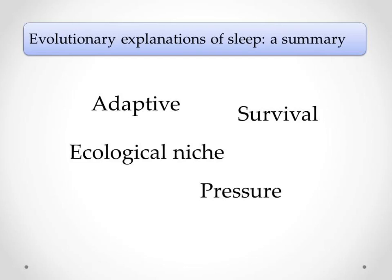In summary, evolutionary theories of sleep propose that sleep is adaptive because it is useful for survival. In order to survive and pass on their genes, an animal should sleep in a way that increases their survival chances. Otherwise, this sleep pattern should have been selected out when animals with a more dangerous or inefficient sleep pattern died out. An animal's ecological niche and the pressure exerted by the environment will dictate their sleep pattern.